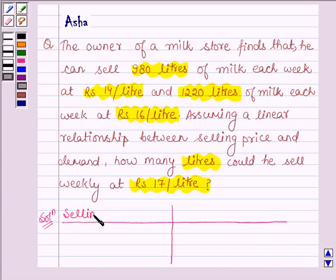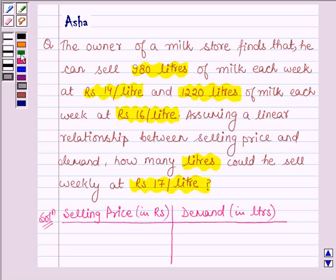So selling price in Rs. and this is demand in litres. Now when the selling price is Rs. 14 then the demand is 980 litres and when the selling price is Rs. 16 then the demand is 1220 litres.